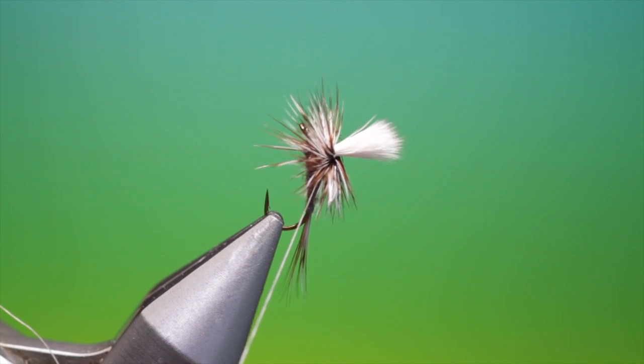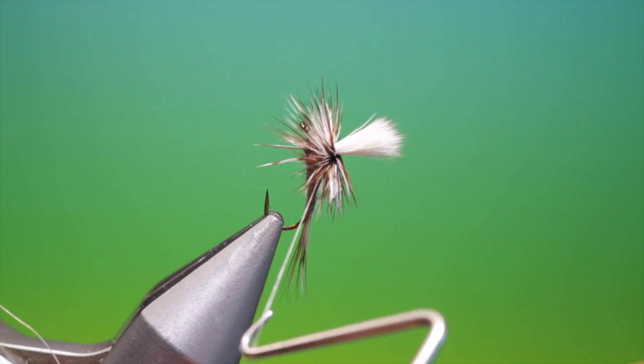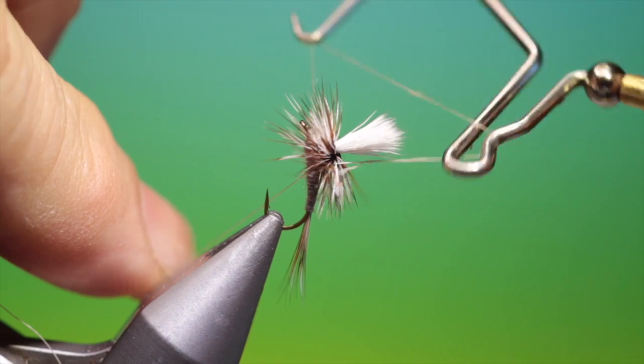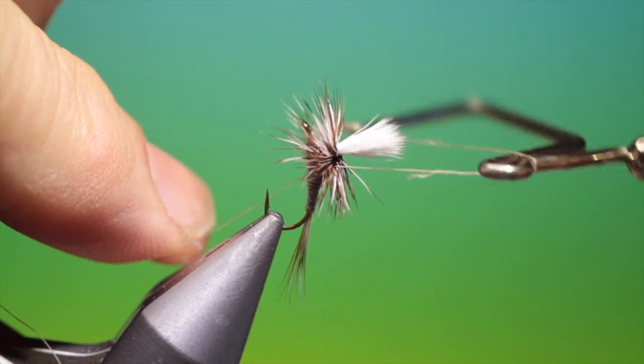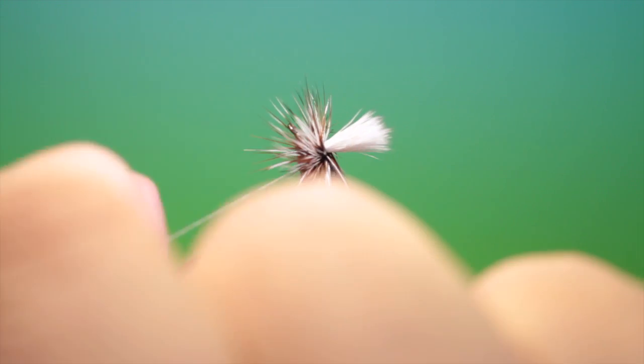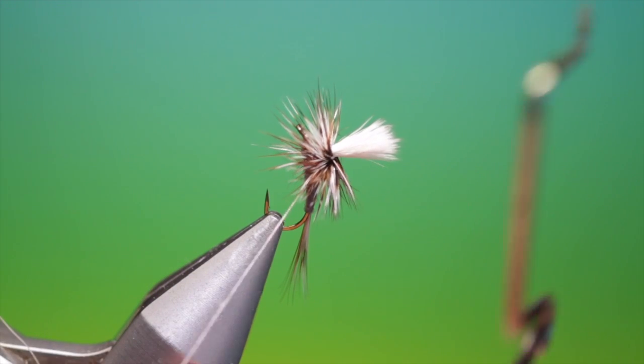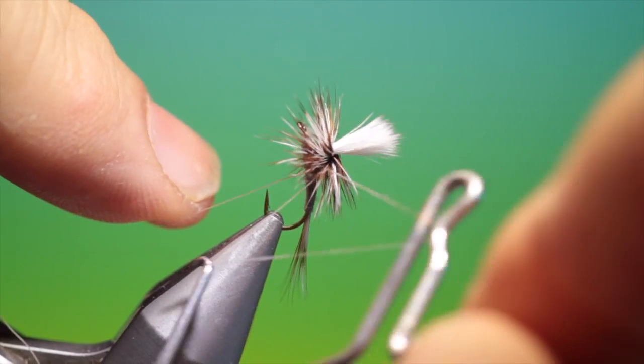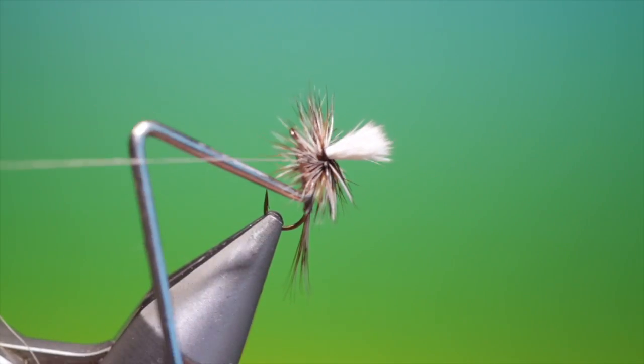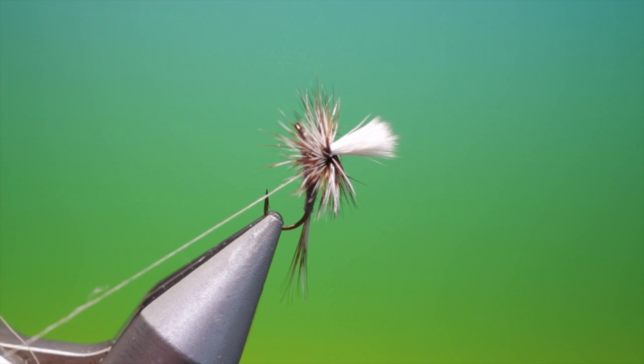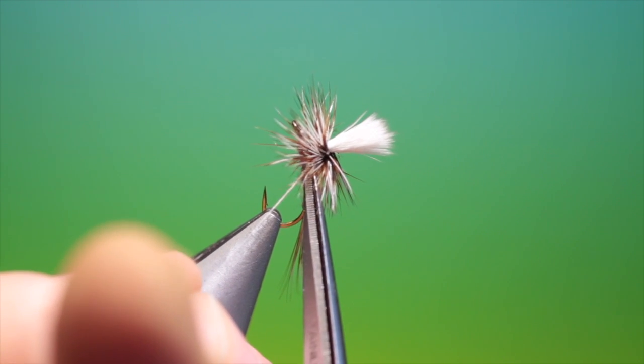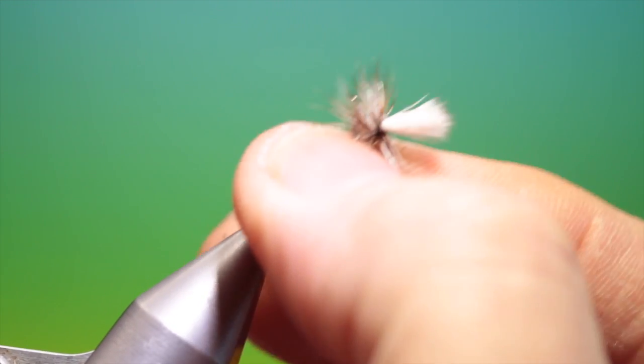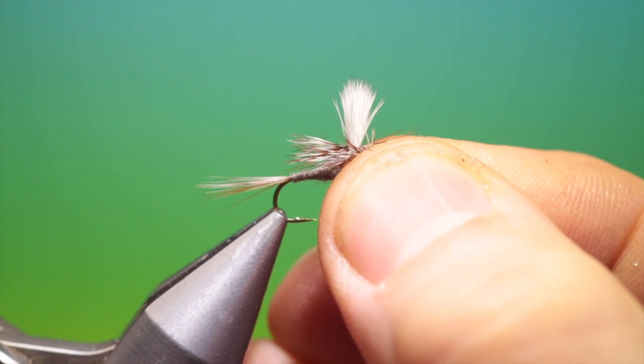And then we'll take our whip finisher. And then we'll just pull that in and tighten. Give it another one. Pull that in, tighten. Like so. Get rid of that tying thread. Turn the fly back around. Then we can replace it back in the vise.